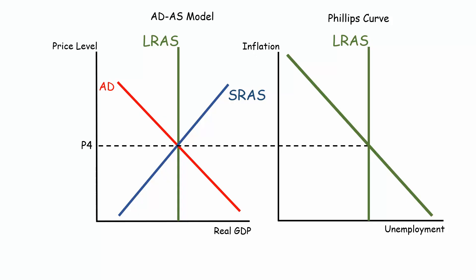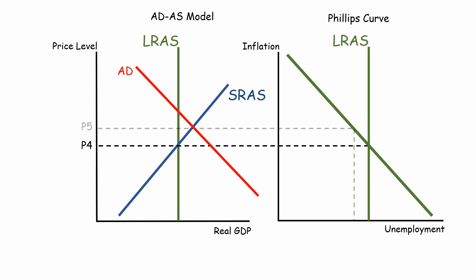This explains the short run Phillips Curve. When the economy is doing well, the aggregate demand increases. As people are willing to spend more money, suppliers also increase production, requiring them to hire more people. However, prices rise or inflation increases.